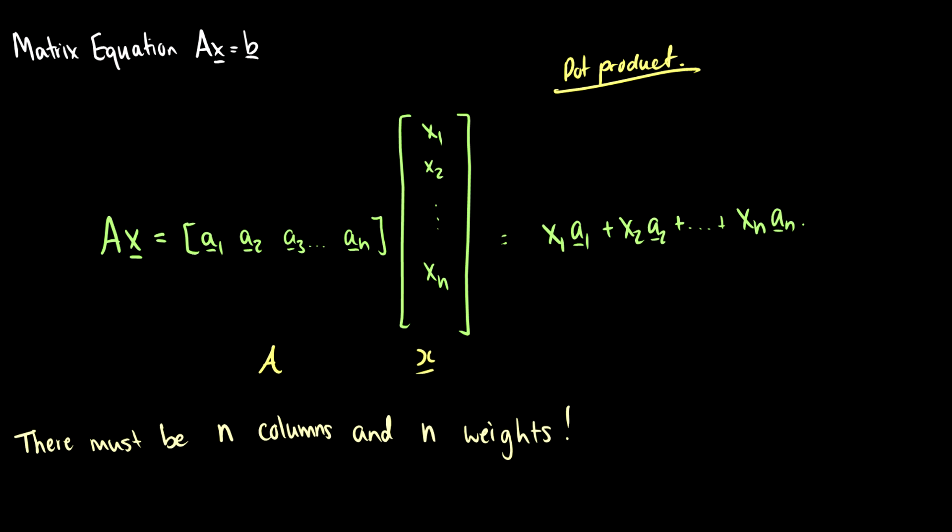But the main idea here is that the number of columns in the matrix must be the same as the number of rows in the vector. So if we have A1 through An we must have x1 through xn.